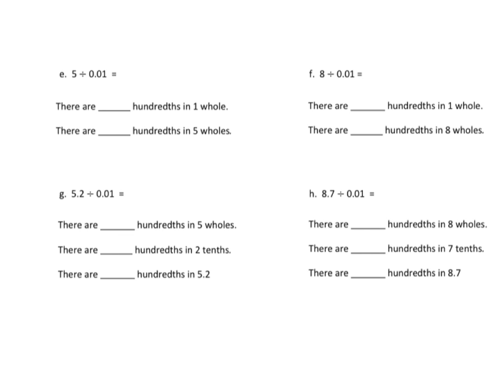The first things you're going to do are going to look like this. We have five divided by one-hundredth. How many hundredths are in one whole? We have one-hundred one-hundredths in one whole. And we have five wholes, so if one unit has a hundred, five units has five hundred. So the answer is five hundred.